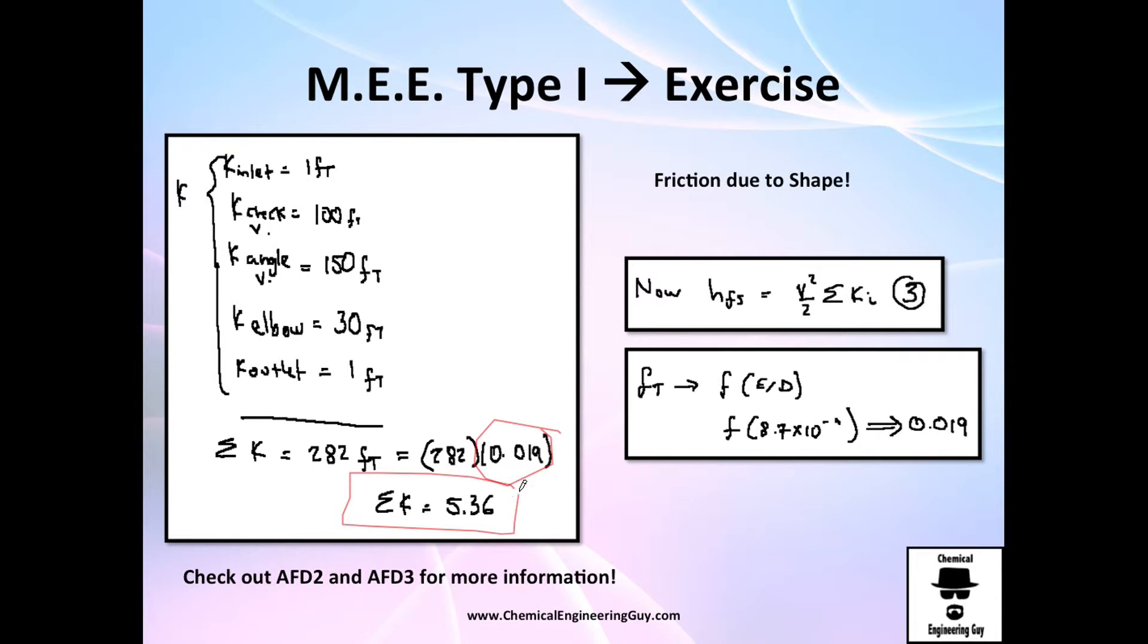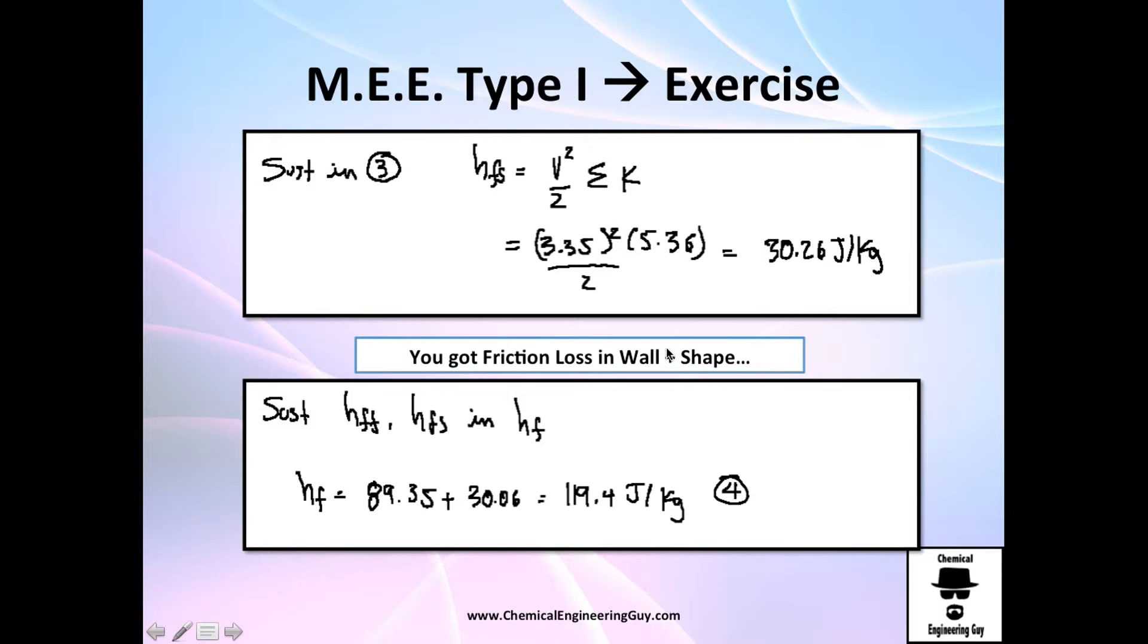So I got my K addition. And recall that I need to multiply it by the velocity head, right here. And yeah, essentially we have everything. Let us calculate the friction loss.